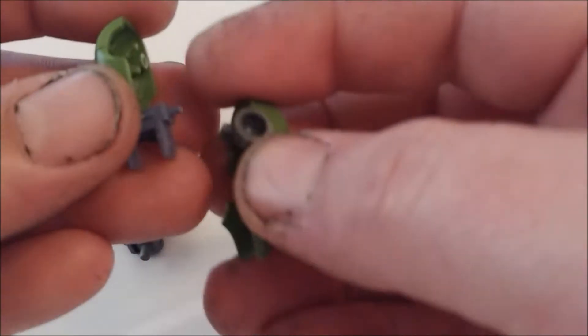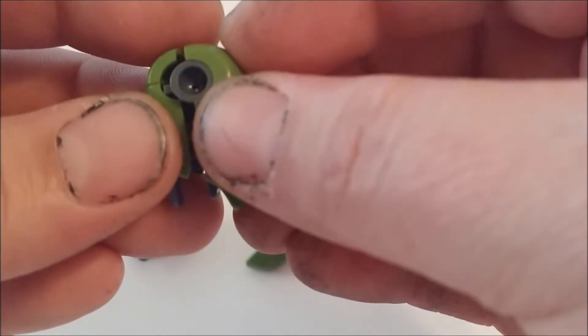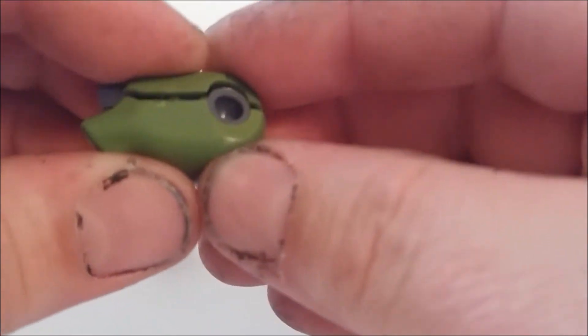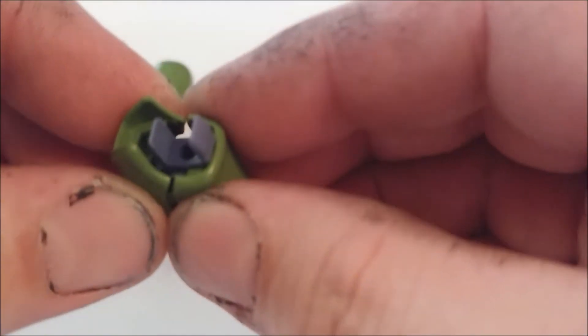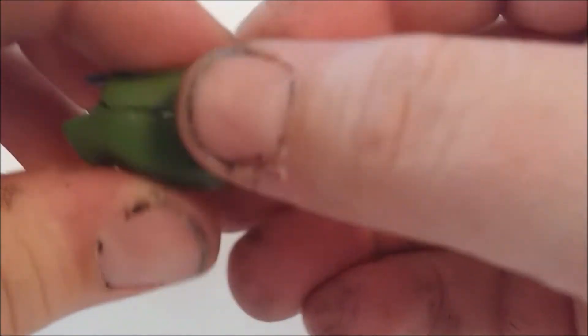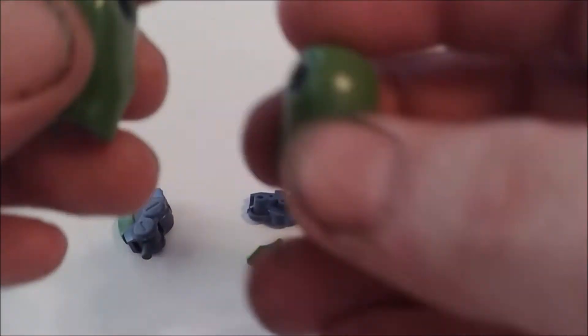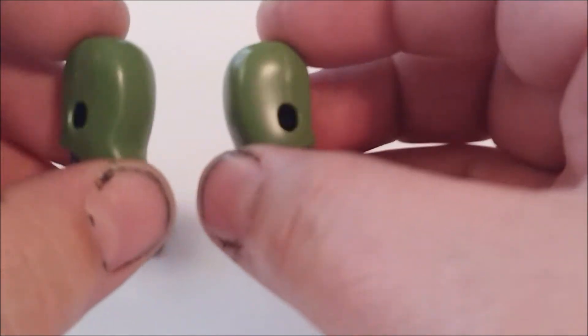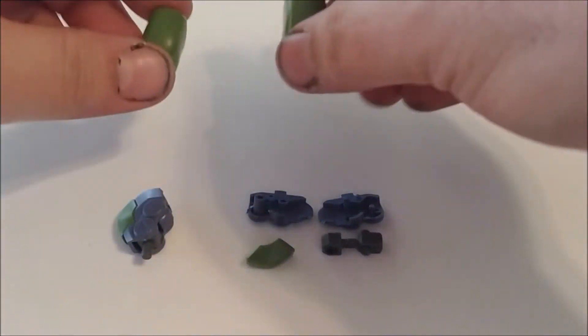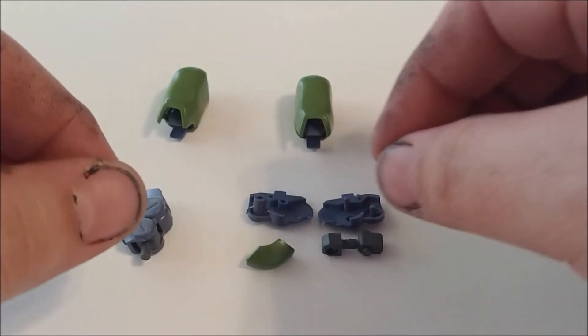That should do it. And now the two halves will go together. There we go. And so now we have our two upper legs. We'll put them right there, now we build the knee.